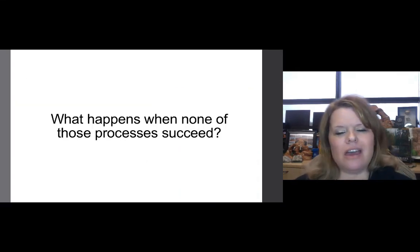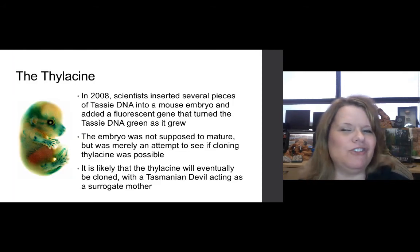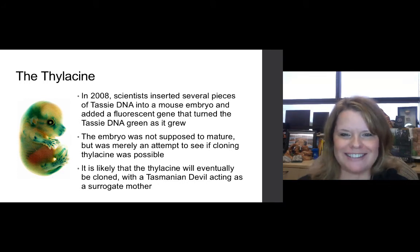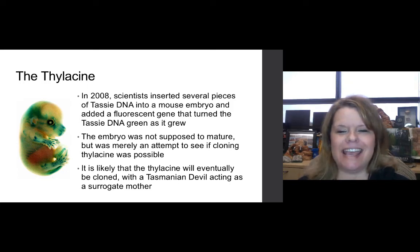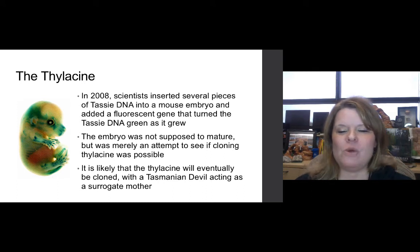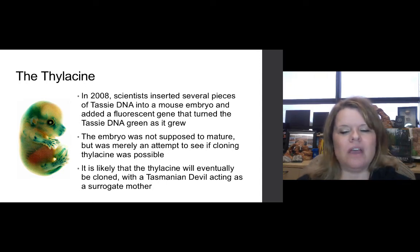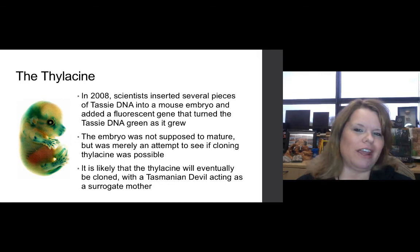So what happens when none of these processes succeed? Well, we'll have an extinction — but maybe there's an exception to the rule. Going back to the thylacine: in 2008, scientists inserted several pieces of thylacine DNA into a mouse embryo and added a fluorescent gene that turned the thylacine DNA green as it grew, so they could actually see it in real time. The embryo was not supposed to mature — it was merely an attempt to see if cloning the thylacine was even remotely possible.